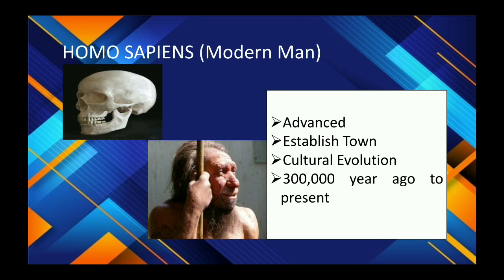Next is us — Homo sapien, or modern man. We are advanced; we can establish towns and have fully developed cultural evolution. This dates 300,000 years ago to the present. Our cranial capacity is 1,450 cc, and we have advanced farming techniques and domesticated animals. The course of cultural evolution has been divided into Paleolithic, Mesolithic, Neolithic, Bronze Age, and the present Iron Age.